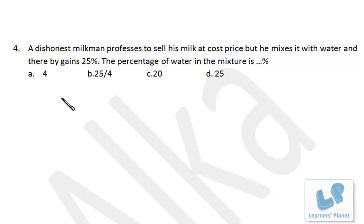In this question, a dishonest milkman professes to sell his milk at cost price but he mixes it with water and thereby gains 25%. The percentage of water in the mixture? Friends, this is a very easy problem. 25% profit means the profit is 1 by 4, right?